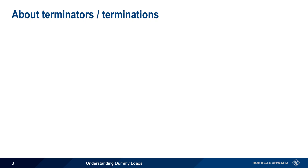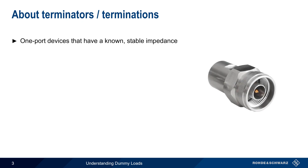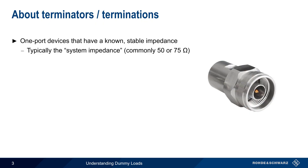Let's start by discussing terminators, also called terminations. These are one-port passive devices that present a known stable impedance at a port or at the end of a line or cable. Typically, this is the so-called system impedance, which in most RF applications is either 50 ohms or, somewhat less often, 75 ohms.